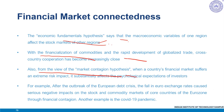It also affects the psychological expectations of investors. Driven by their psychological expectations and irrational behaviors such as the herd effect, investors frequently adjust their investments, resulting in strong risk spillovers. For example, after the outbreak of the European debt crisis, the fall in euro exchange rates caused serious negative impacts on the stock and commodity markets of core eurozone countries through financial contagion.